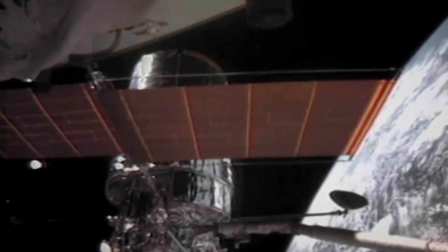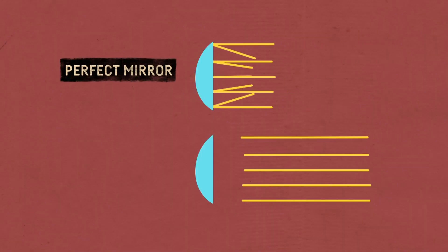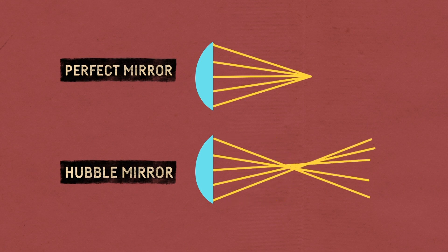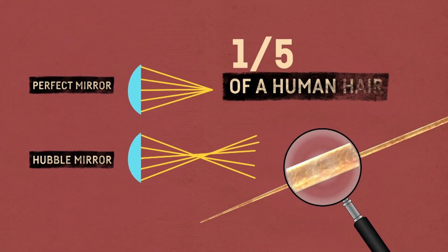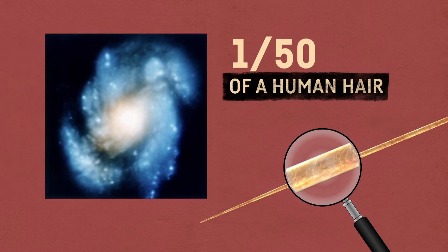But things weren't quite right. The mirror, which reflected all the light into the telescope, was ever so slightly off. I'm talking 1/50th of a human hair off. And this meant all of the images were blurry.